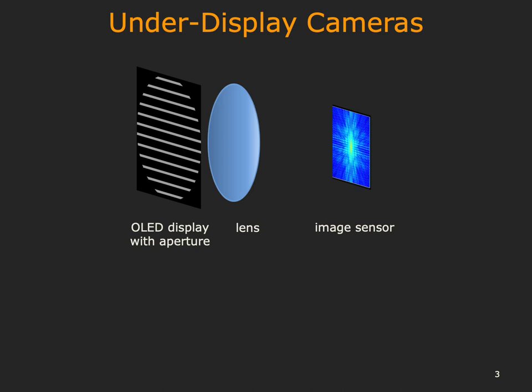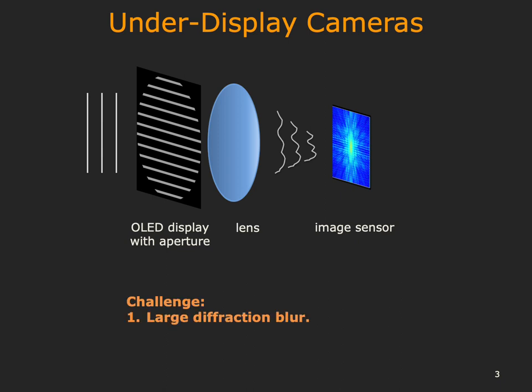Let's first look at the construction of an under-display camera. We have a lens and an image sensor observing a scene through the openings of the display. The display acts as an aperture on the lens, and it has features on the order of tens to hundreds of microns. These features diffract light, resulting in a large blur. Due to the small features on the display, the size of this blur kernel is large, often spanning hundreds of pixels in the image plane, which results in a severely blurred photograph. This de-blurring is further complicated by the low SNR of the captured image, since the display panel blocks a large portion of light.